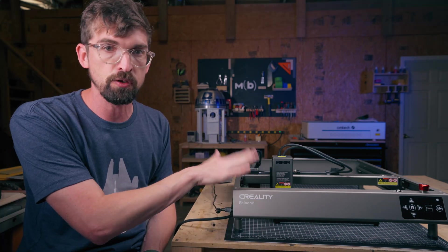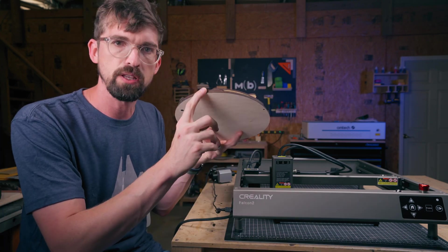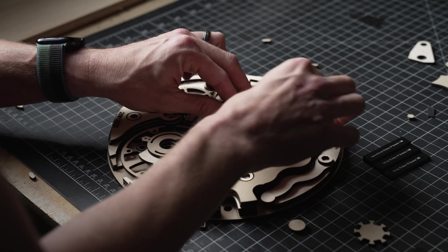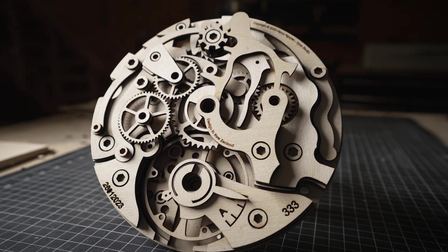Since Creality started as a 3D printing company, I thought I would do a design showing how you can take different layers of wood and turn it into something that is more 3D. This is actually a really cool internal mechanism of a watch. It doesn't actually move, but it's like for display.